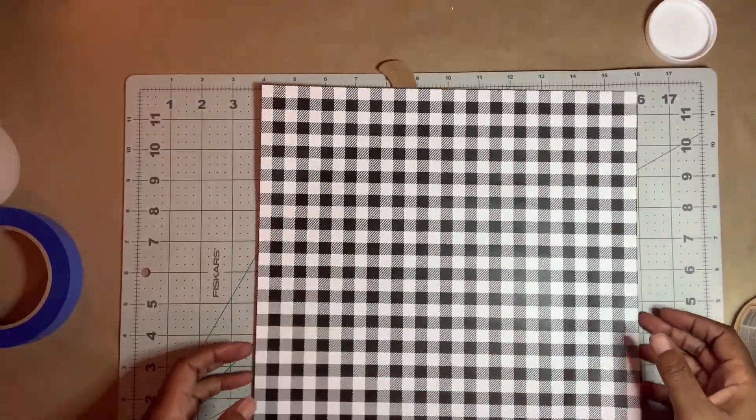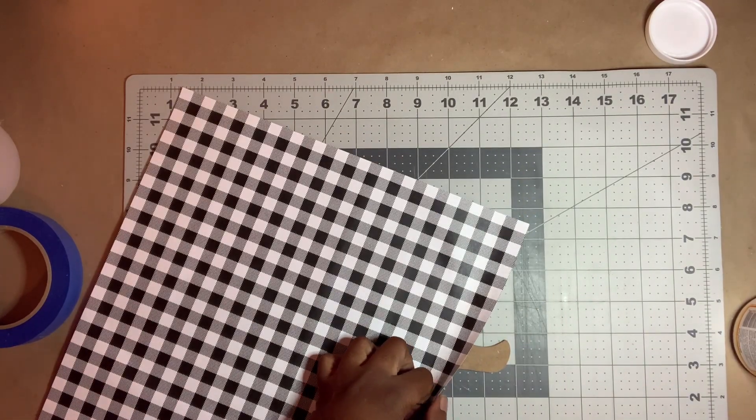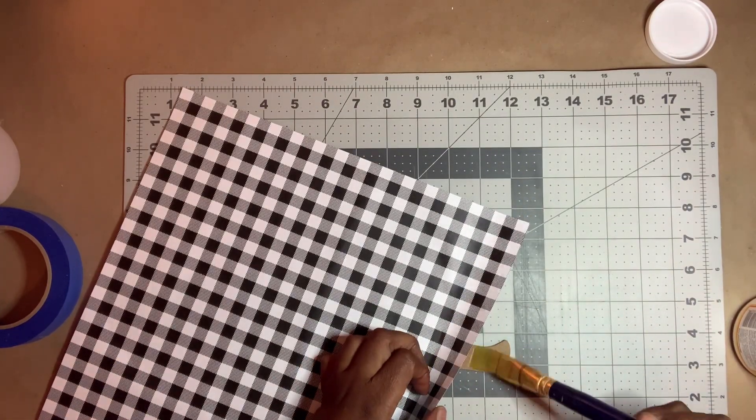Next, I went around and secured the edges I may have missed. Then I trimmed down the excess paper and set it aside to dry.